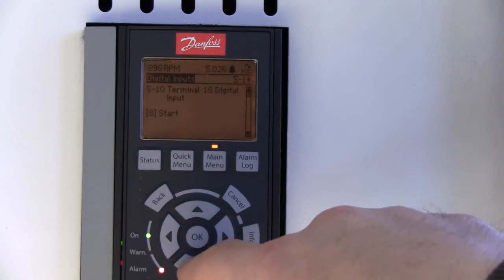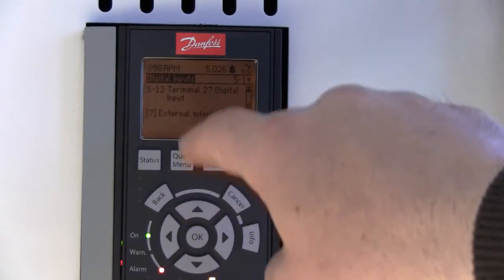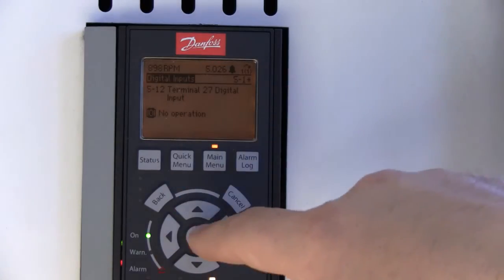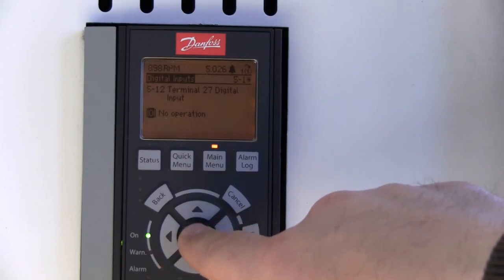Use your down arrow to scroll to terminal number 27. Hit OK. And then push the down arrow until you see no operation. Hit OK.